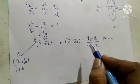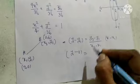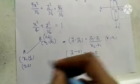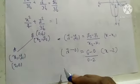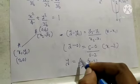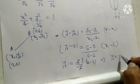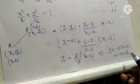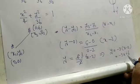So x1 is 2, y1 is 0, x2 is 0 and y2 is 6. Using these values in the line equation, we get y minus 0 equal to 6 minus 0 divided by 0 minus 2 times x minus 2. This simplifies to y equal to 6 by minus 2 times x minus 2, which gives y equal to minus 3 times x minus 2, or y equal to minus 3x plus 6.